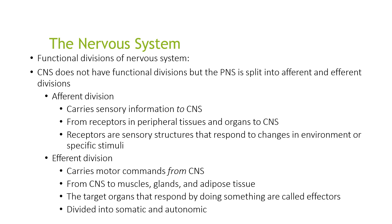Looking at the functional divisions of the nervous system: the central nervous system does not have functional divisions, but the peripheral nervous system is split into afferent and efferent divisions. The afferent division carries sensory information from the receptors of peripheral tissues and organs to the central nervous system. The receptors are sensory structures that respond to changes in the environment or specific stimuli.